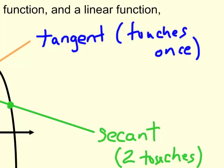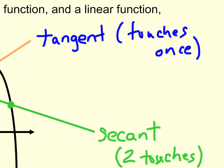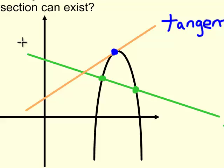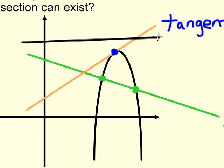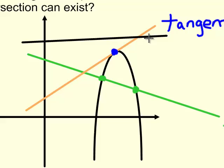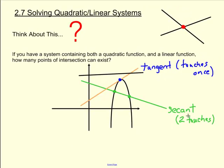Of course, it's also possible for a line to not even touch the parabola at all. What if you had a line that started over here and just went in this direction and totally missed the parabola? This line here would have no points of intersection. It doesn't have a special name like the tangent or secant line.